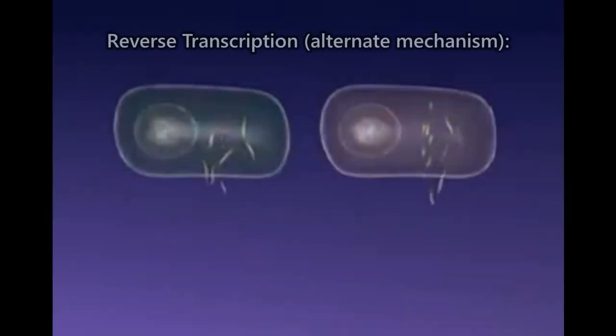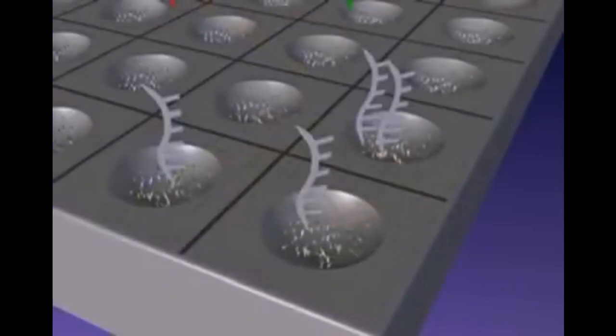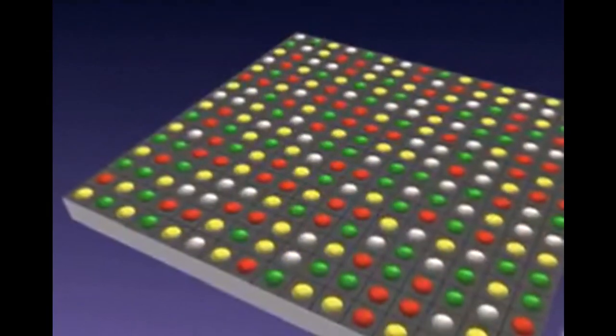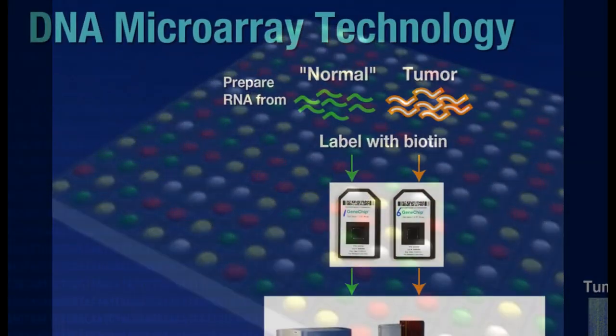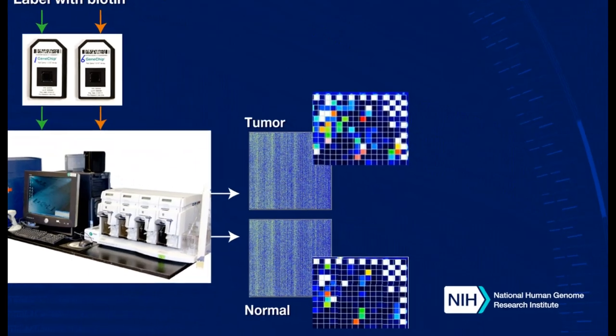The strands are dyed different colors and are inserted into separate chips. The DNAs will bind to the complementary strands of DNA in the chips, depending on whether they are mutated or not. The two chips can then be compared with each other to spot any differences and mutations in the target gene.